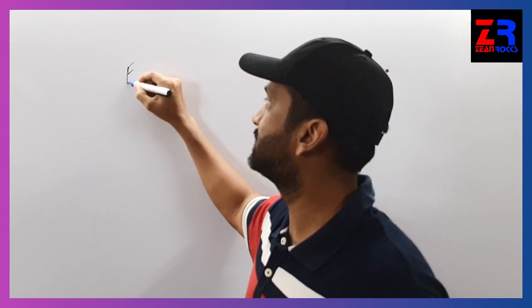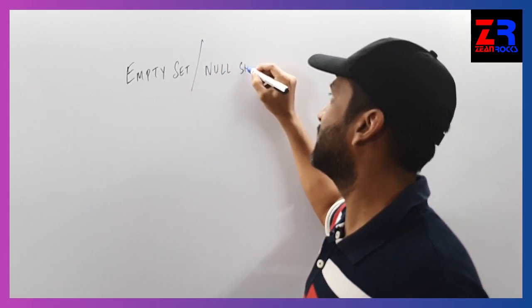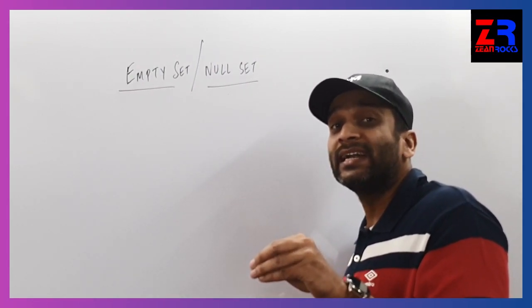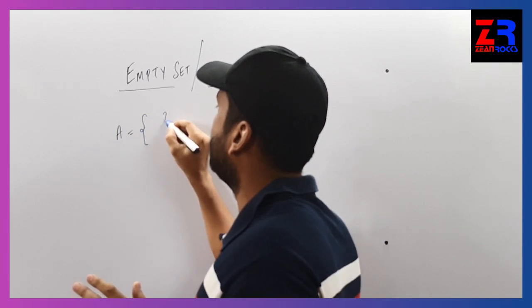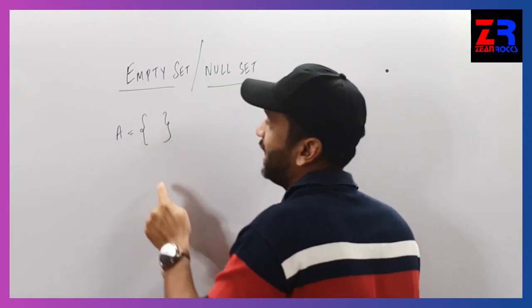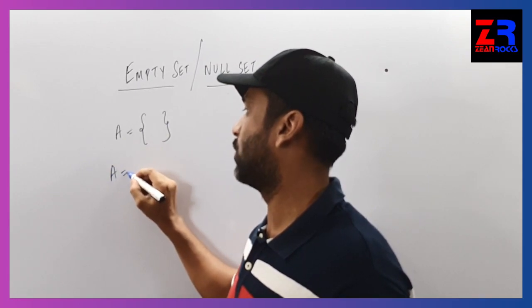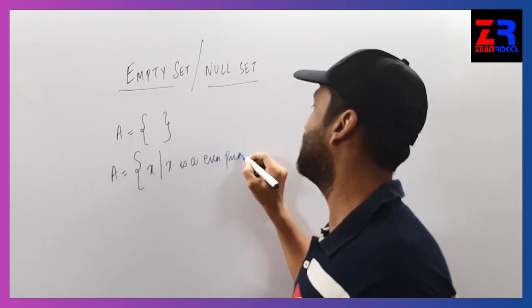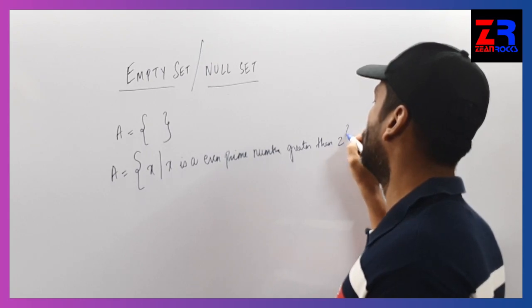The second concept is called an empty set or a null set. An empty set or a null set is a set which does not contain any element. This set has no element at all, so it is called an empty set or a null set. For example, I can write A is equal to X such that X is an even prime number greater than 2.